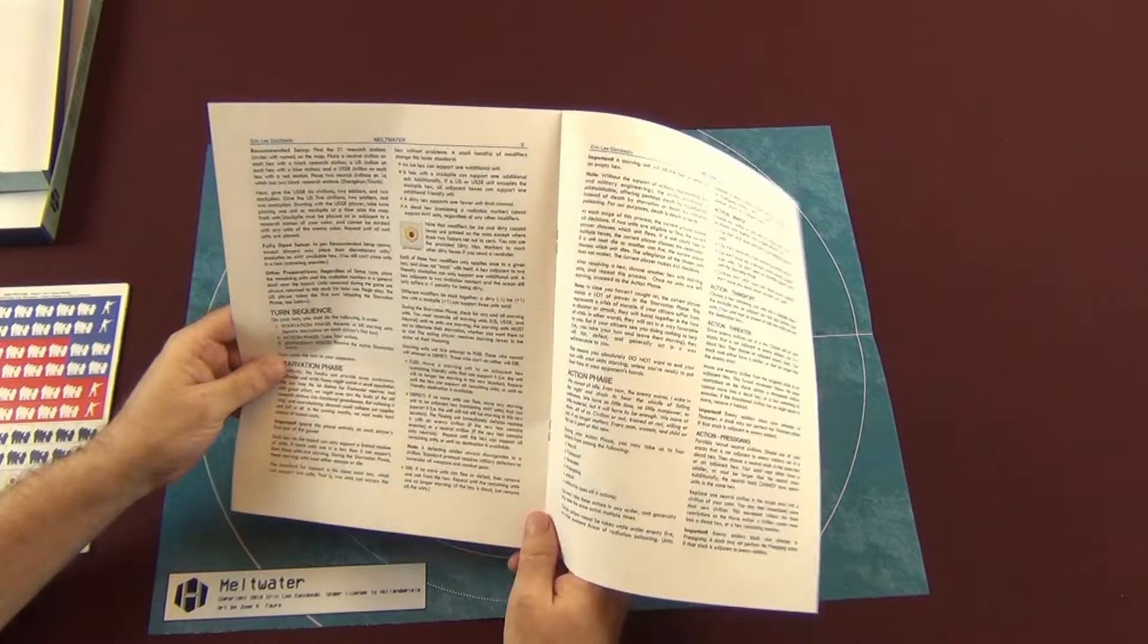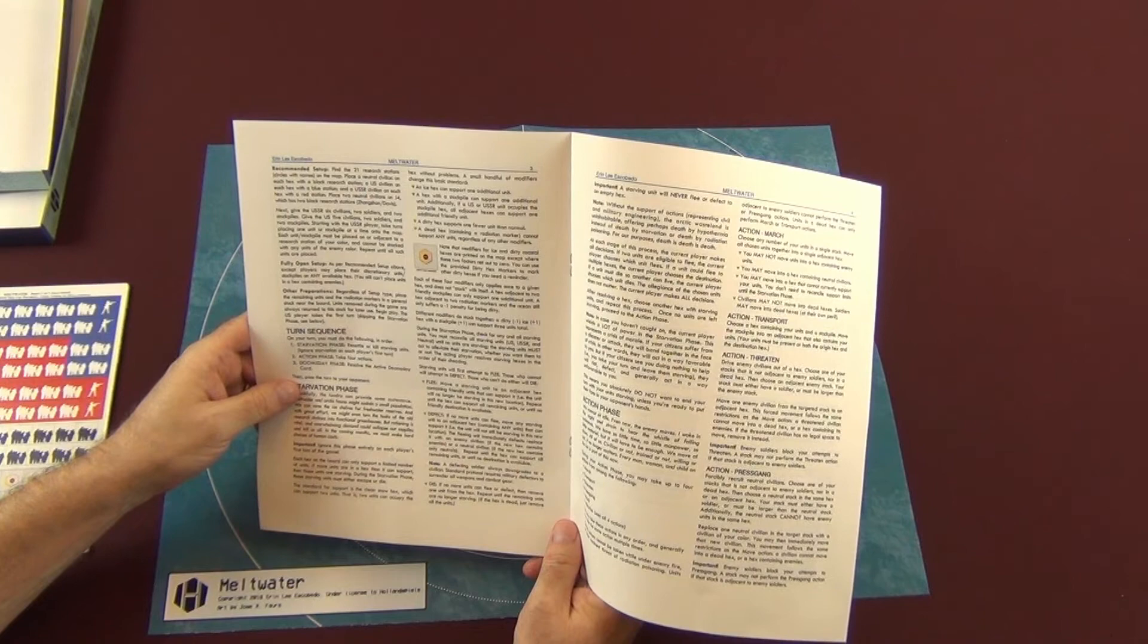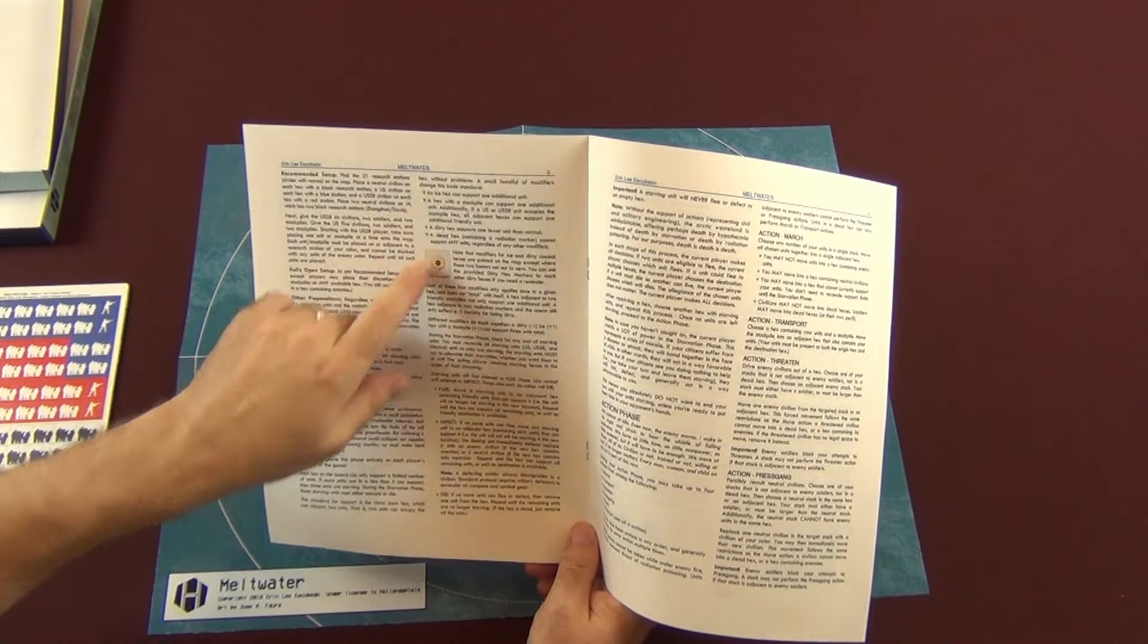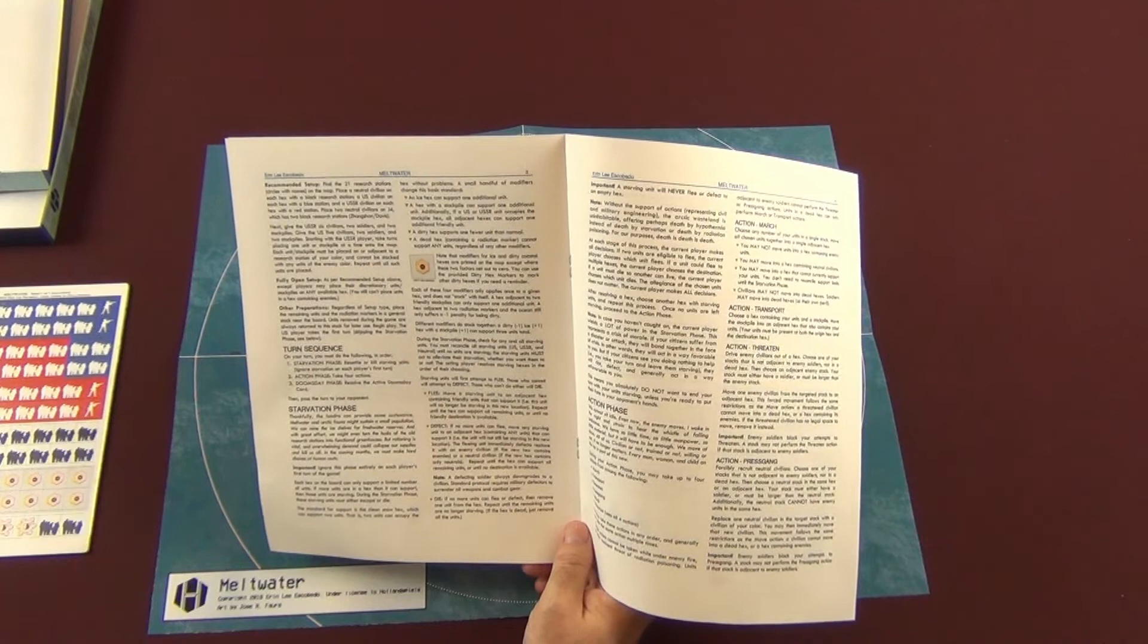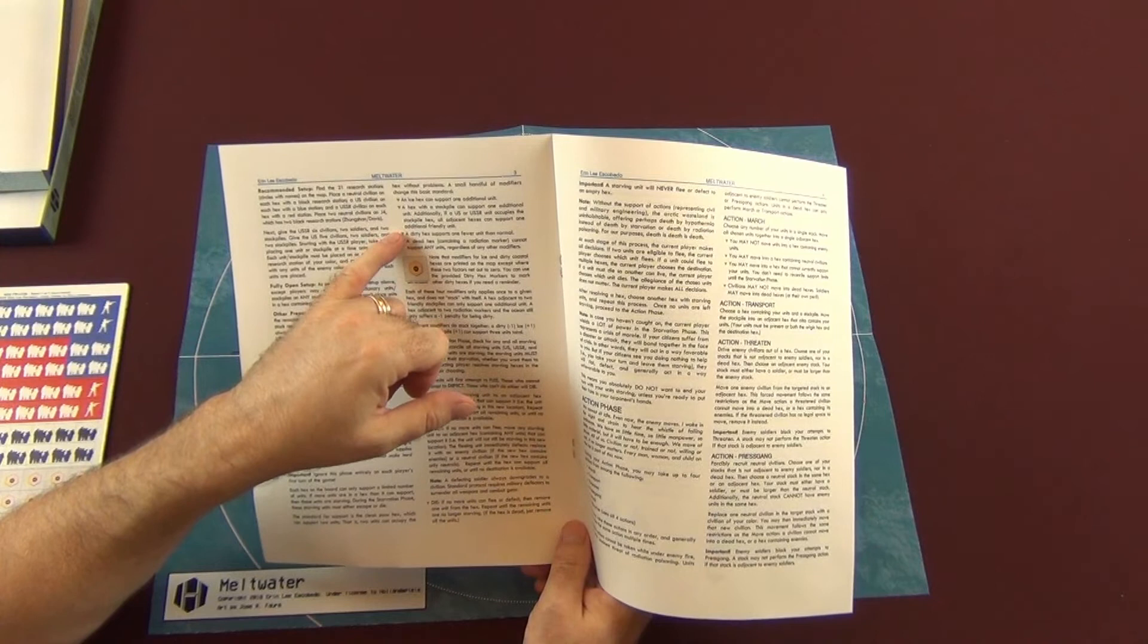So you've got to be concerned not only with taking out your enemy but also maintaining your own population and maybe even sacrificing some for the greater good of the others. An ice hex can support one additional unit. A hex, and this is the standard for support, is a clean snow hex which can support two units. That is if two units can occupy the hex without problems.